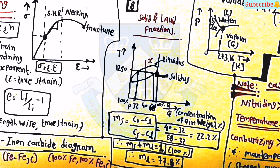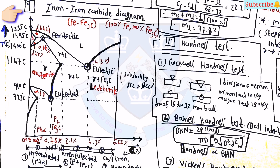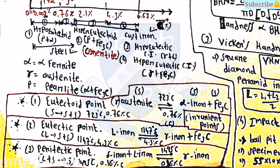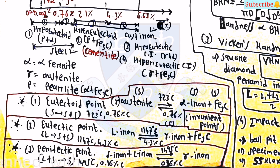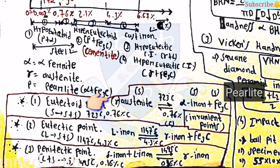The most important topic from the materials science subject is the iron–iron carbide diagram. The diagram is shown carefully. You need not worry about the accuracy of the diagram; you can take a screenshot if you want. There are some important terms to remember. First is the eutectoid point: the temperature is 723 degrees Celsius and carbon percentage is 0.76%. At the eutectoid point, austenite converts into alpha iron plus Fe3C.